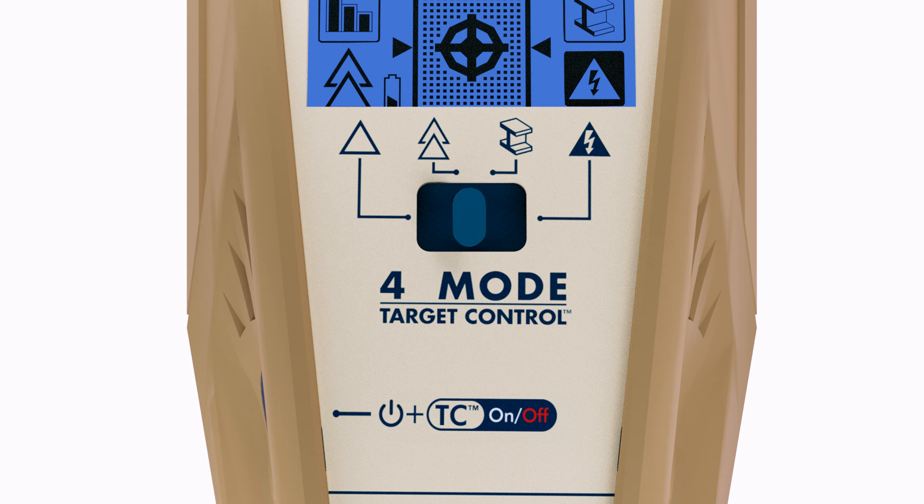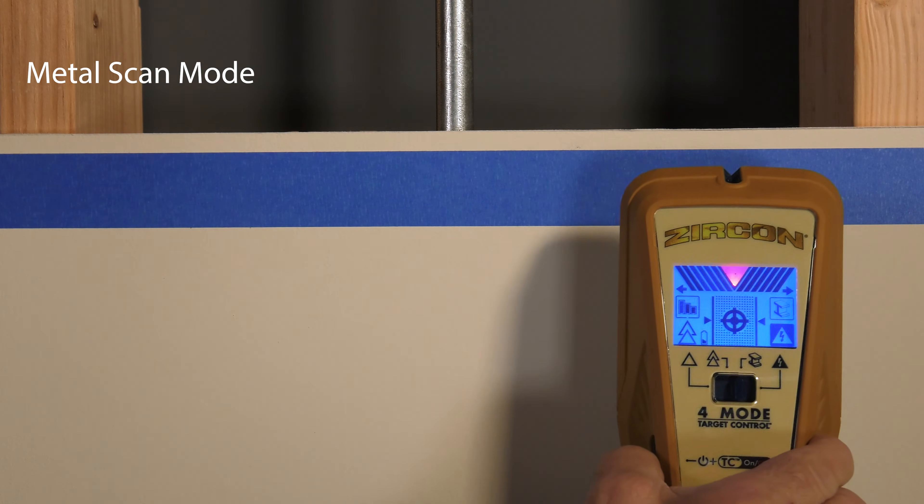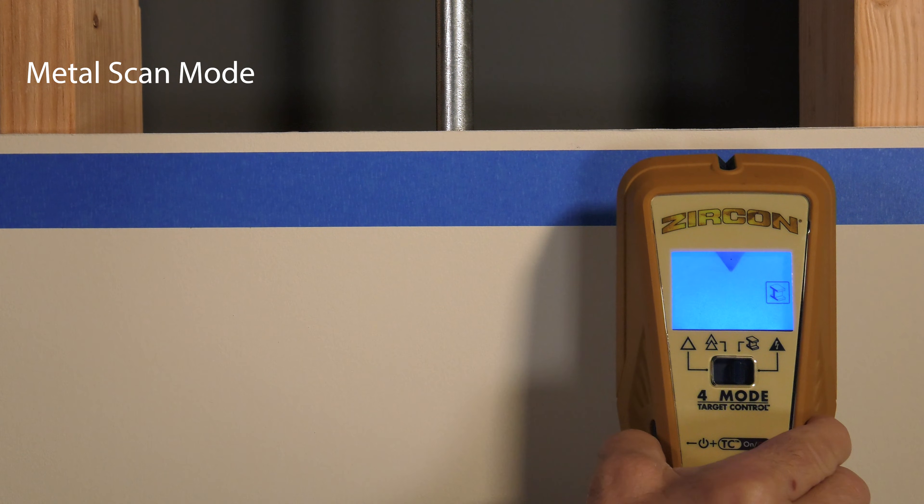To find metal, switch the mode selector to metal scan. Press the power button on in the air, away from the wall and any known metal. The backlight will illuminate blue.